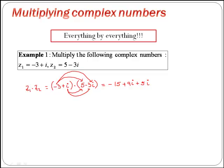And finally, i by minus 3i, which is minus 3i squared. So have a look at this.